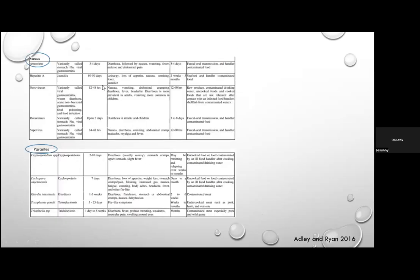Viral foodborne illness includes norovirus and hepatitis viruses; with viruses, infected food handlers are an important source of propagation. Parasitic foodborne illness involves Cryptosporidium, Cyclospora, Giardia, Toxoplasma, and Trichinella — each associated with various foods as listed.